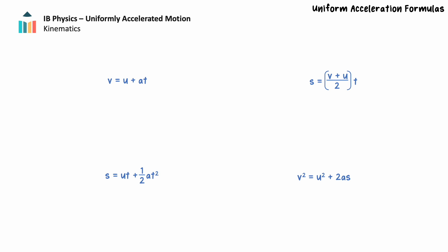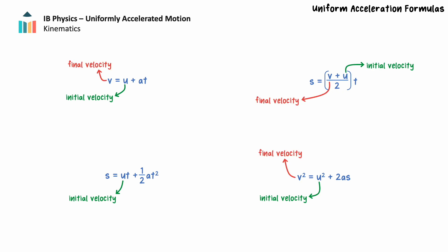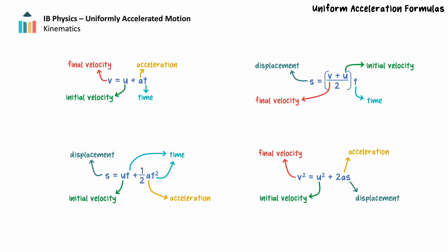Each equation contains the initial velocity of the object, represented by the variable u. Three of the four equations contain the final velocity of the object after acceleration, represented by the variable v. Three of the four equations contain the acceleration of the object, represented by the variable a. Three of the four equations contain the time of acceleration, represented by the variable t. Lastly, three of the four equations contain the displacement of the object, represented by the variable s.